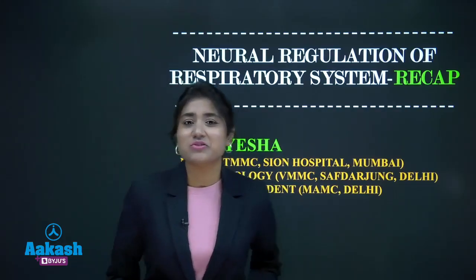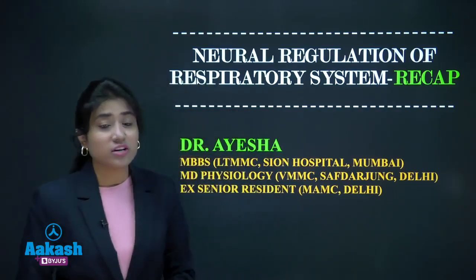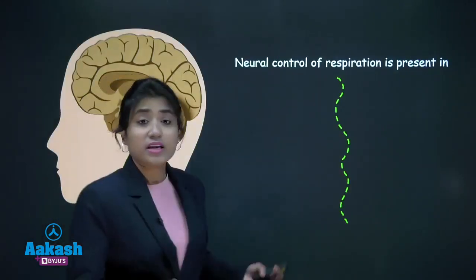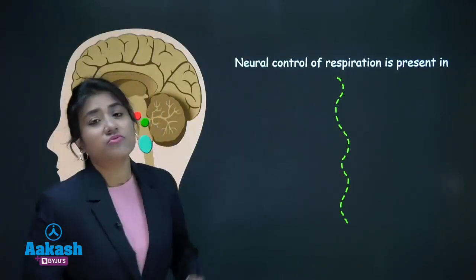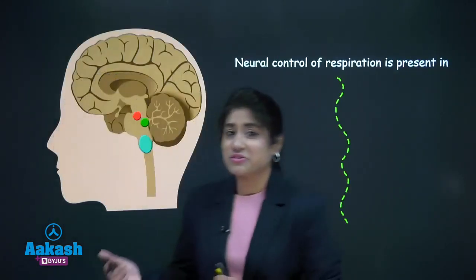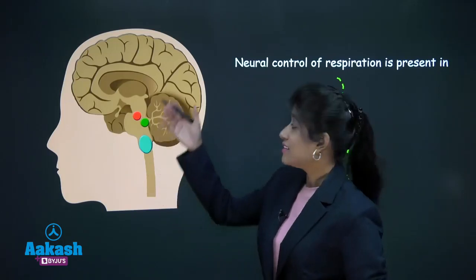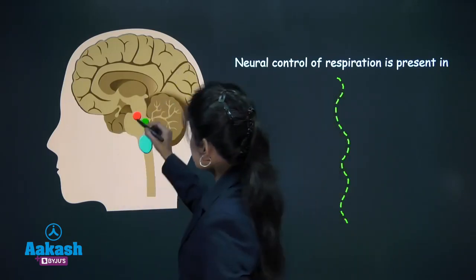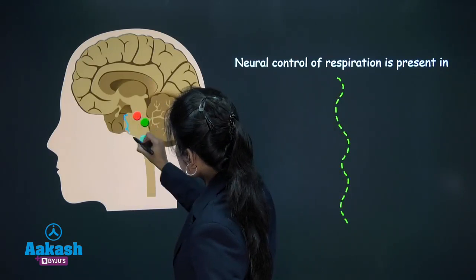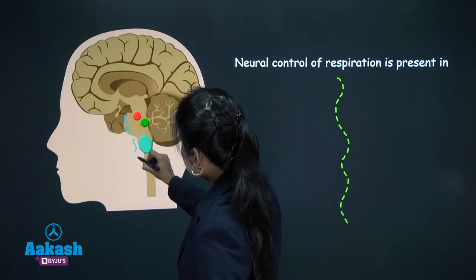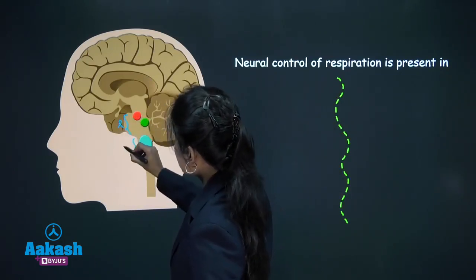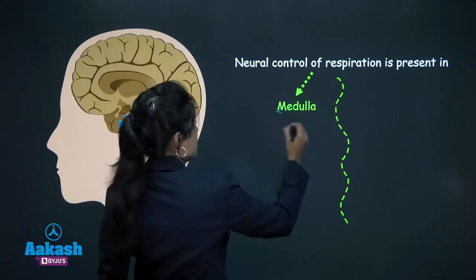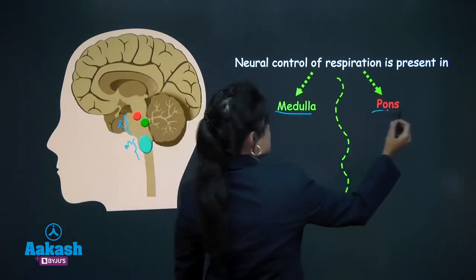Hello students, let us quickly do a recap of neural regulation of the respiratory system. As we know, neural control of the respiratory system — this is your sagittal section of the brain — it is present in the pons and medulla.